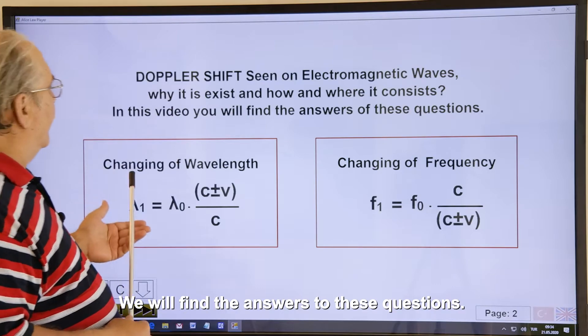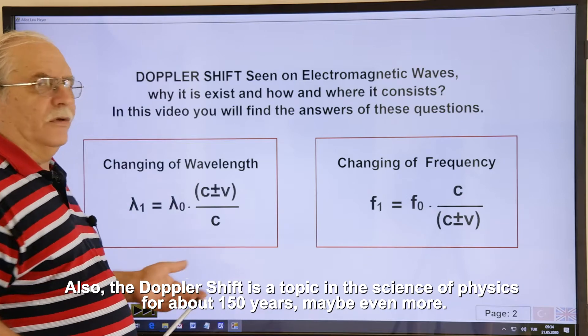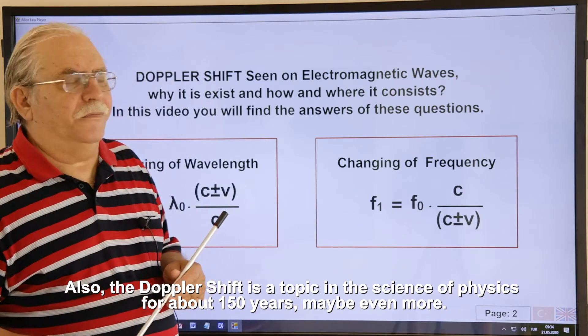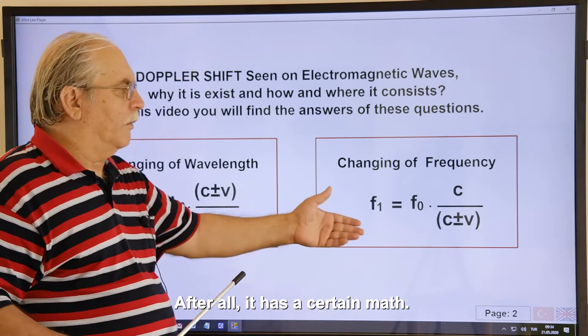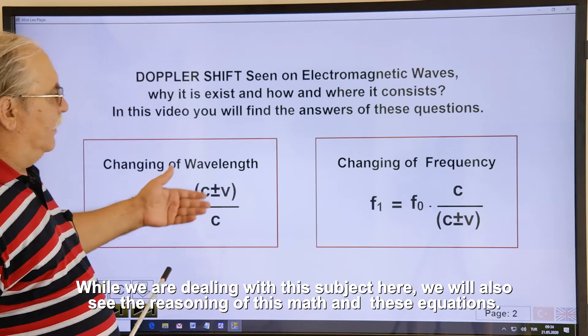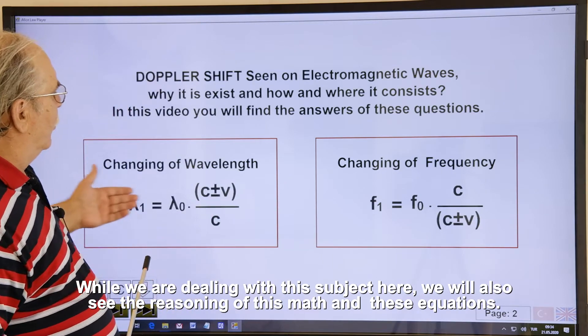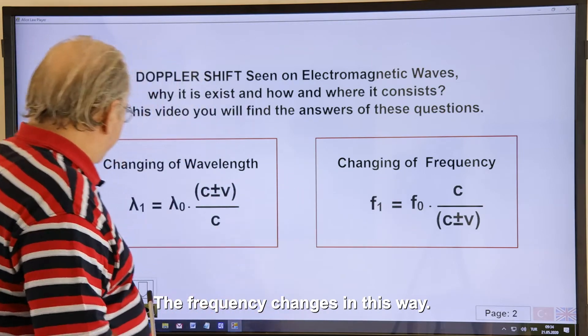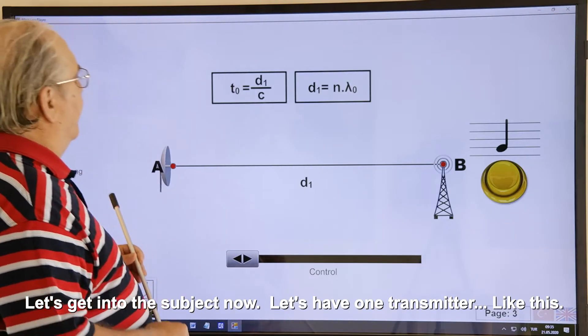We will find the answers to these questions. Also, the Doppler shift is a topic in the science of physics for about 150 years, maybe even more. After all, it has a certain math. While we are dealing with this subject here, we will also see the reasoning of this math and these equations. Wavelength changes in this way. The frequency changes in this way. Let's get into the subject now.